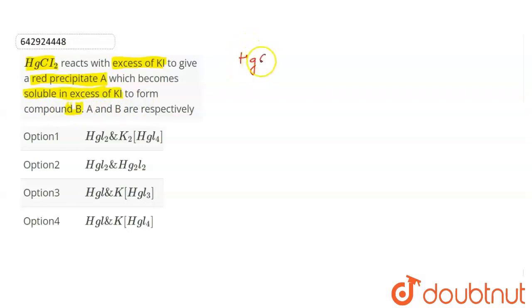HgCl2 reacts to give a red color precipitate. That precipitate will be HgI2. This is compound A. Then what happens?